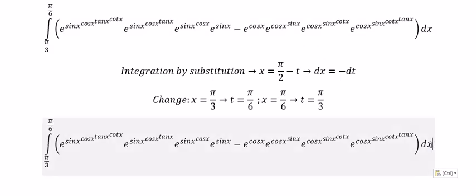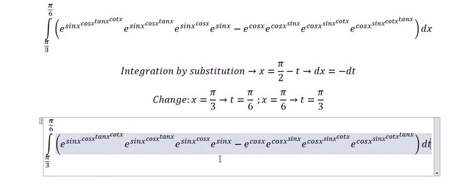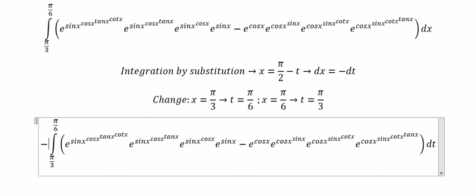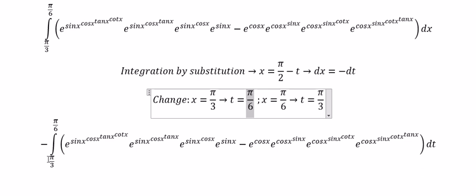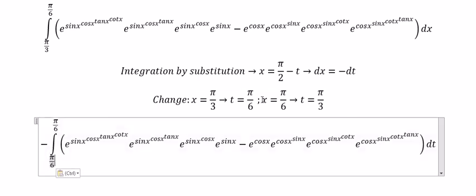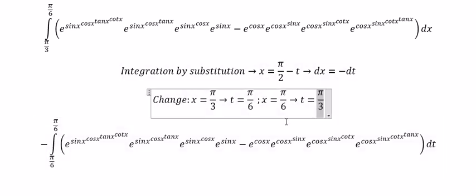So we change dx to dt, we change π over 6 and π over 3. For π over 6, we change to π over 3.